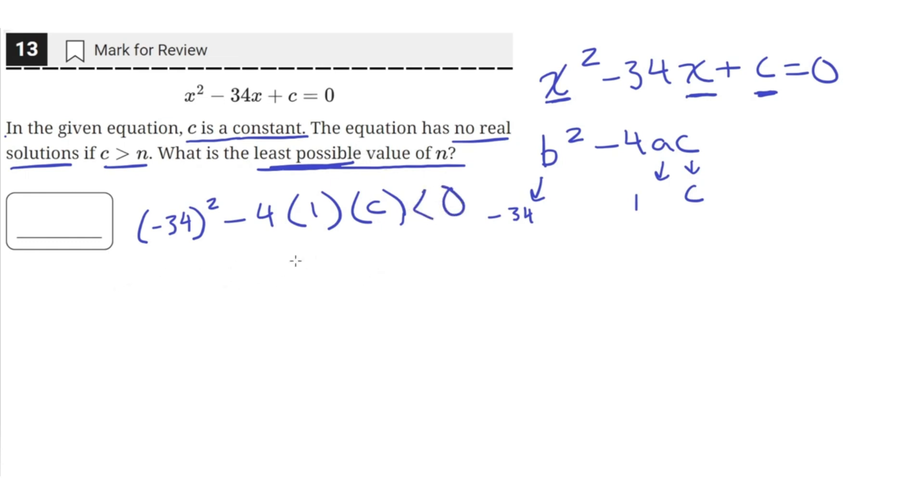Because when the discriminant is equal to zero, that means there's one solution. And when the discriminant is greater than zero, it has two solutions. But when the discriminant is less than zero, it has no solution.